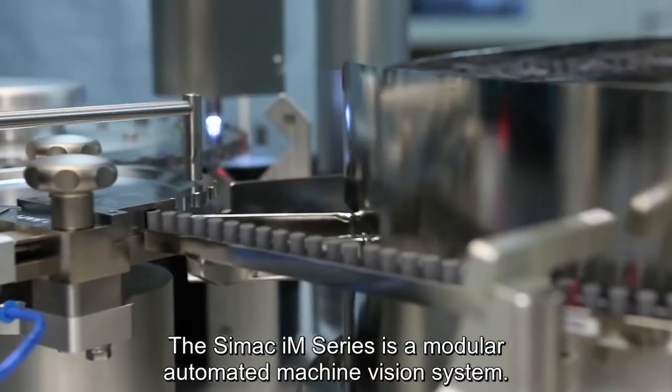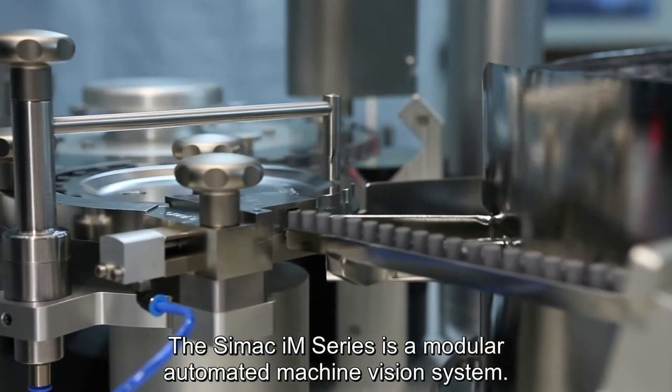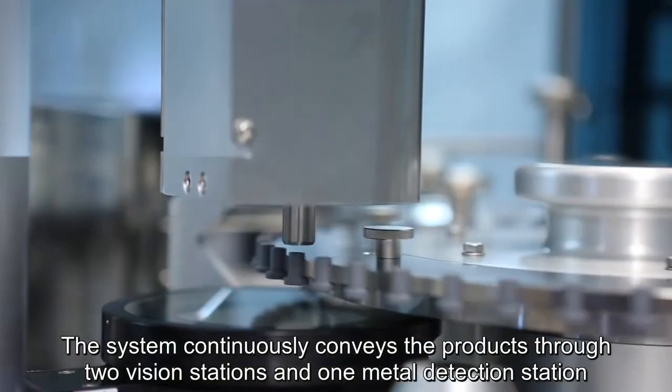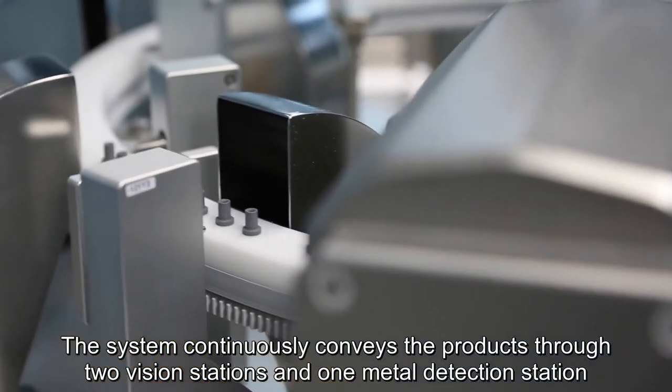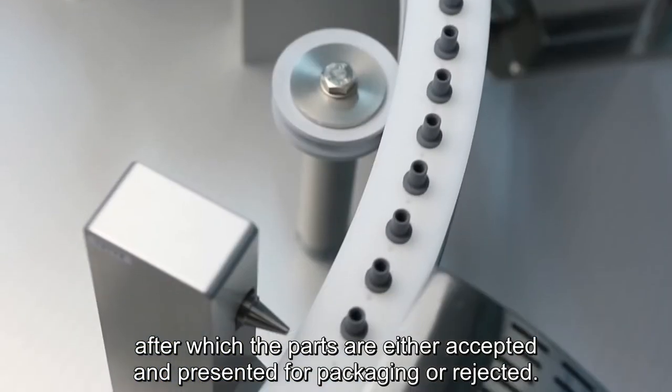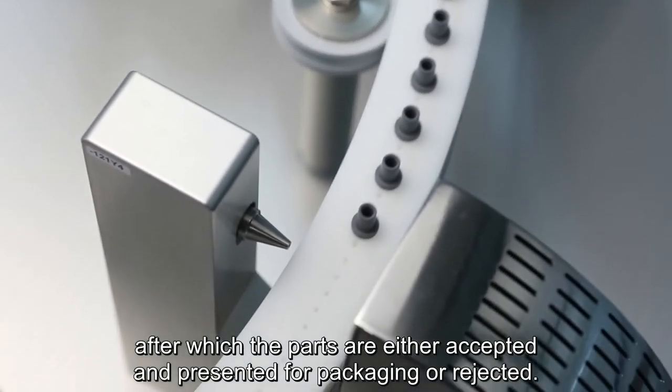The SIMEC IM series is a modular automated machine vision system. The system continuously conveys products through two vision stations and one metal detection station, after which parts are either accepted and presented for packaging or rejected.